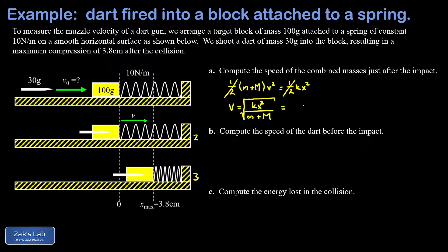It's time to put in the numbers. The spring constant was 10 newtons per meter. The maximum compression was 3.8 centimeters, which needs to be converted to meters, so that's 0.038. Remember to square that. The sum of the two masses, that's 30 grams for the dart and 100 grams for the block, so 130 grams or 0.130 kilograms. When we run the numbers to three significant digits, we get 0.333 meters per second for the velocity of the combined masses after the impact.